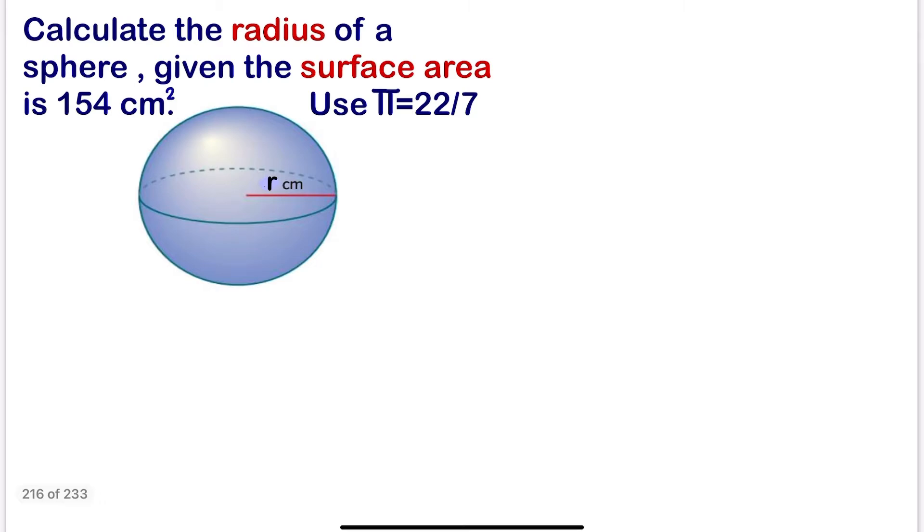We have been asked to calculate the radius. We have been given the surface area. So it is preferable for us to use the formula of surface area since surface area is given. The surface area of a sphere, the formula for surface area of a sphere is the same as 4πr².